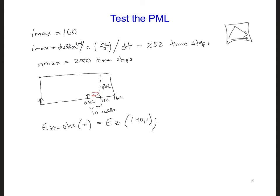To test the PML, we can compare what we get at this location relative to a very large grid where we don't see any reflections from the right side of the grid.